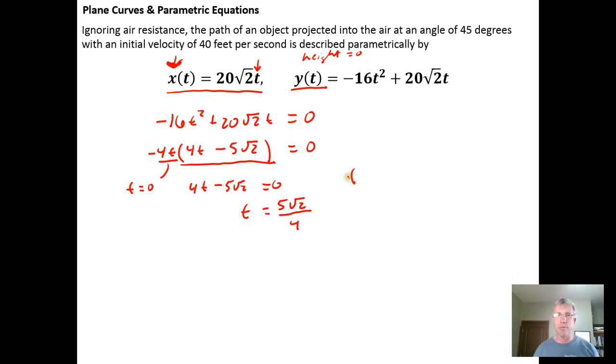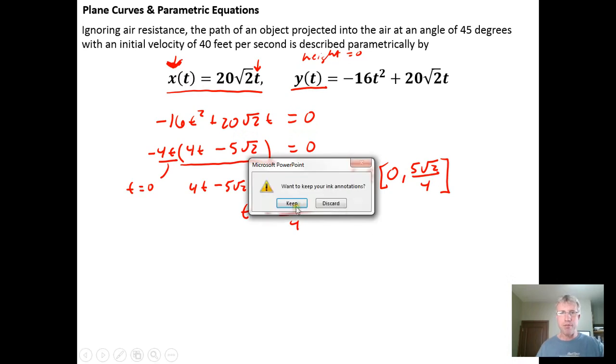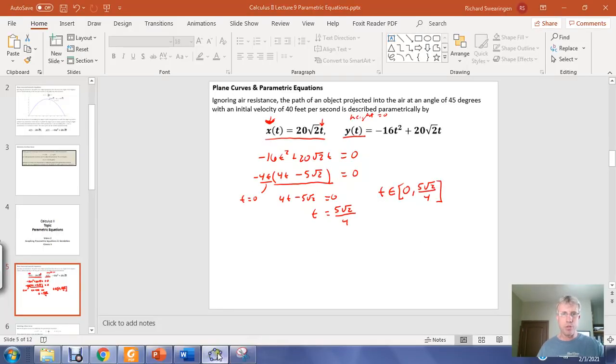The time interval we're going to be interested in graphing over is the time interval that starts at the beginning of the flight when the ball or object is launched from the ground and ends when the object lands on the ground again, 5 root 2 over 4 seconds after it was projected. So this is the time interval we will be interested in using. I'm going to escape from here out to GeoGebra.